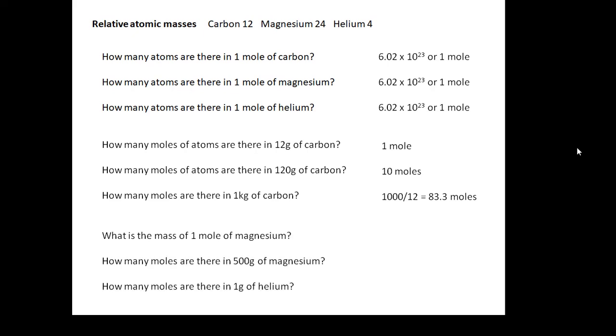What is the mass of a mole of magnesium? How many moles are there in 500 grams of magnesium? How many moles are there in 1 gram of helium? Scribble the answers down. A mole of magnesium is 24 grams. If you look at the relative atomic masses, 12 grams of carbon is a mole, 24 grams of magnesium is a mole, 4 grams of helium is a mole. A magnesium atom is twice as heavy as a carbon atom. How many moles are there in 500 grams of magnesium? That will be 500 divided by 24, which is 20.8 moles. And how many moles in a gram of helium? That will be a quarter of a mole, 0.25 moles.